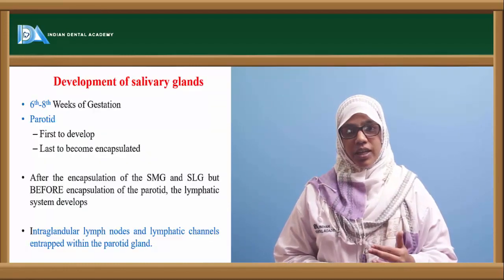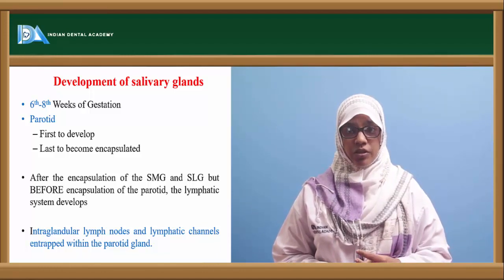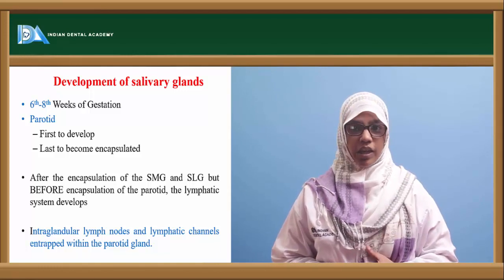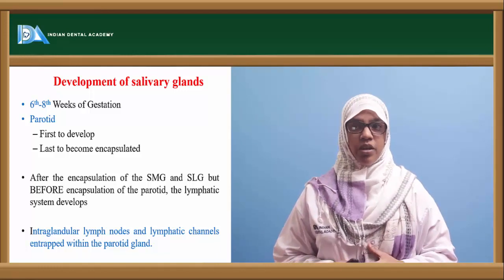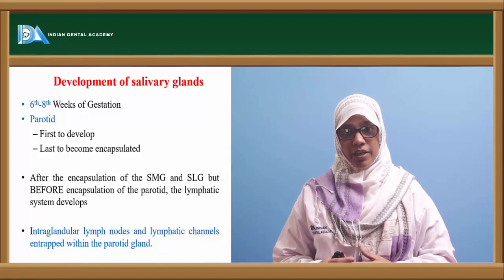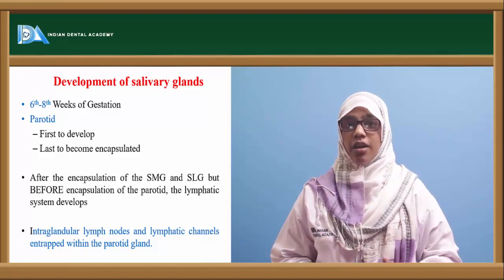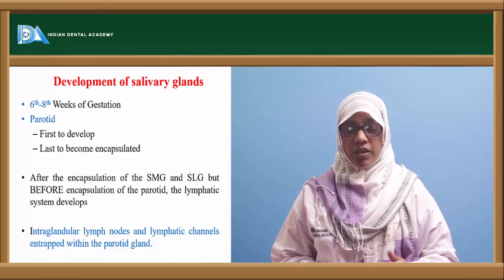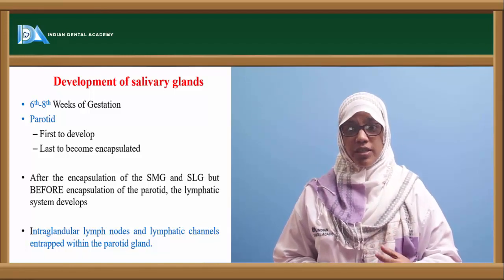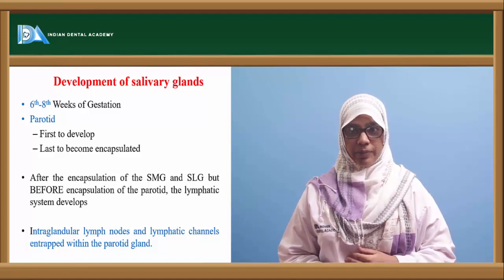These glands develop by six to eight weeks of gestation, wherein the parotid is the first to develop but the last one to get capsulated. After encapsulation of the submandibular and sublingual glands but before encapsulation of the parotid gland, the lymphatic system starts to develop. That's the reason why we have intraglandular lymph nodes and lymphatic channels present within the parotid gland.